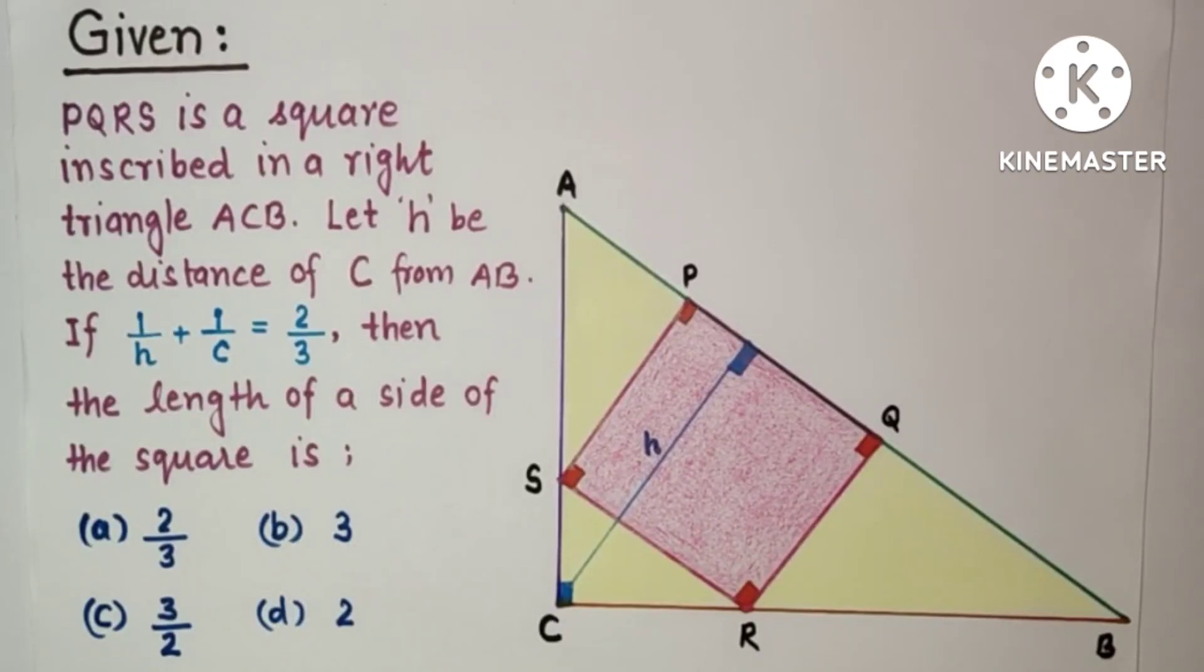Hello friends and viewers, welcome once again. Today we will discuss a geometry problem which is JEE Main MCQ level type, based on 10th grade geometry. In this question, in the diagram given, ACB is a right angle triangle, PQRS is a square.